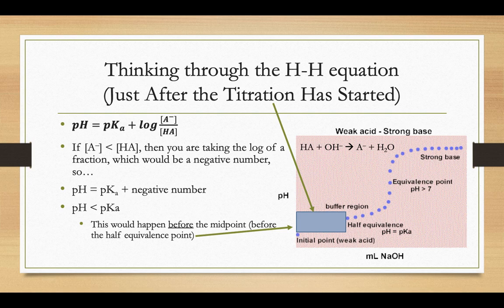In that little chunk of the graph there, it happens before the midpoint, or what's also called the half-equivalence point, in that blue highlighted section there. That's where we're focusing on, where if I asked you to predict the pH in that section of the buffer, the titration curve there, that you would estimate that the pH is going to be less than the pKa value.